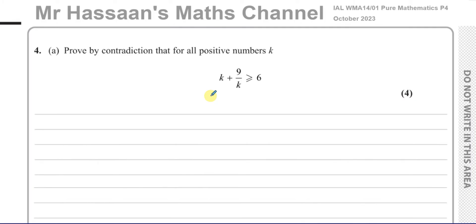Another example: someone accuses you of robbing a bank. You want to prove you did not rob the bank. By contradiction, assume you did rob the bank. If you robbed the bank, you'd have lots of money and be rich — but you're not rich. That's a contradiction, therefore you did not rob the bank. Again a simplified example, but it gives you the idea of how the whole situation works.